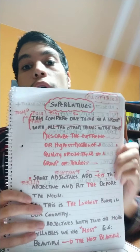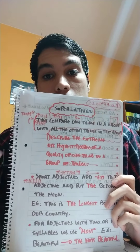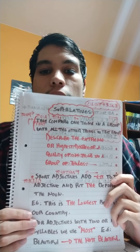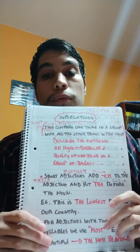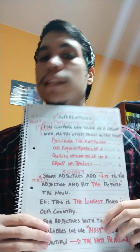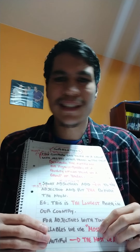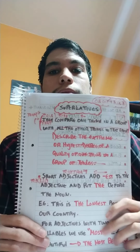For adjectives with two or more syllables, we use 'most'. Para los adjetivos que tienen dos sílabas o más, usamos 'most'. For example, beautiful → the most beautiful. She is the most beautiful girl I have ever seen — the most beautiful of all. That's why we use the superlative.